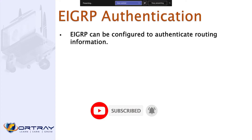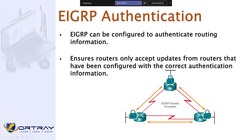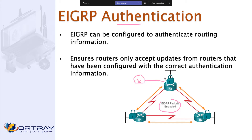EIGRP can be configured to authenticate routing information, ensuring routes are only accepted from routers configured with the correct authentication. Without authentication, the packet exchange between R1, R2, and R3 is unencrypted, so anybody can connect a rogue router with EIGRP and get all the routes, potentially manipulating and attacking your network.